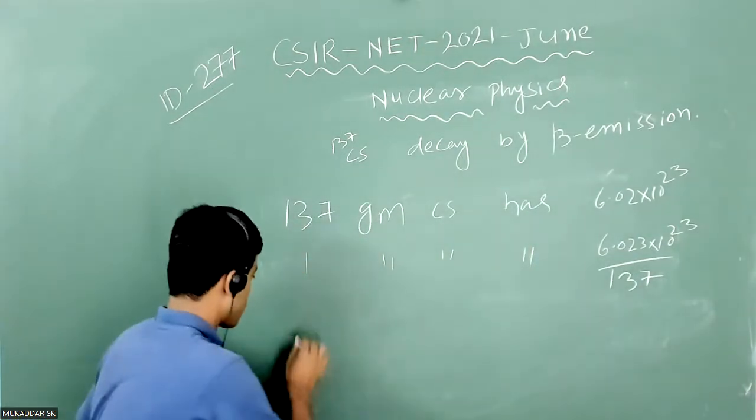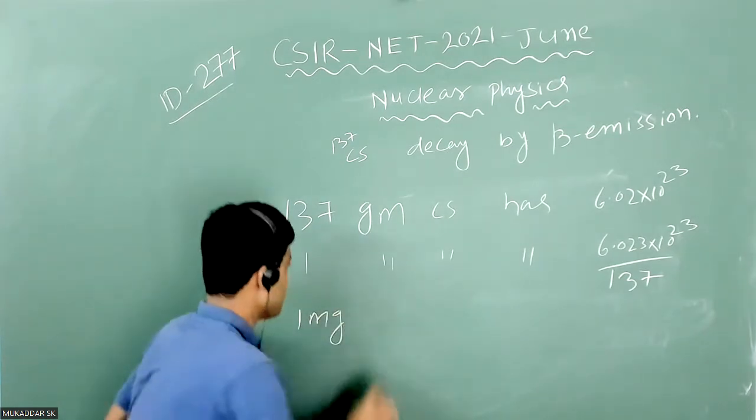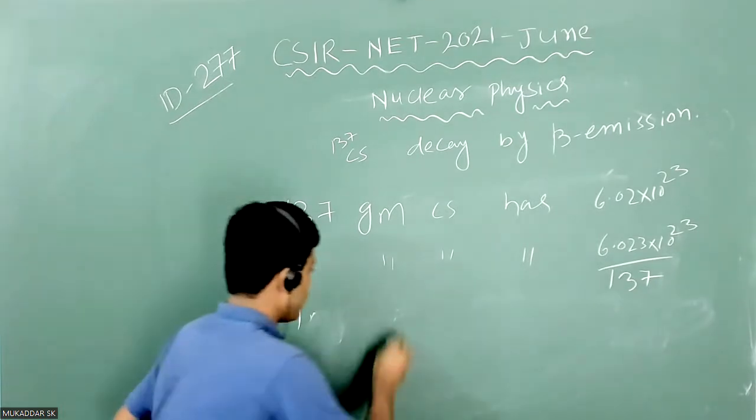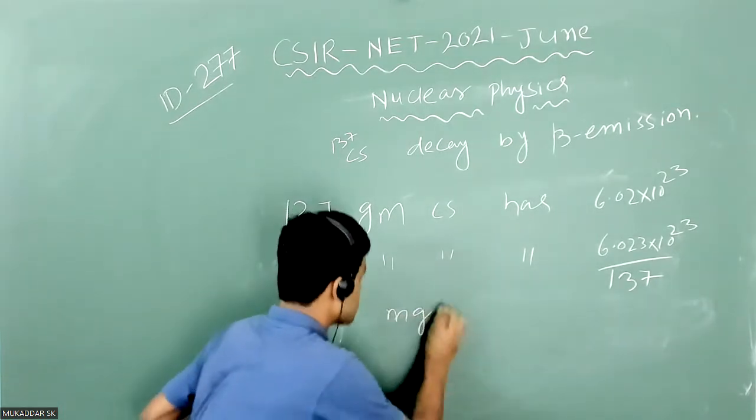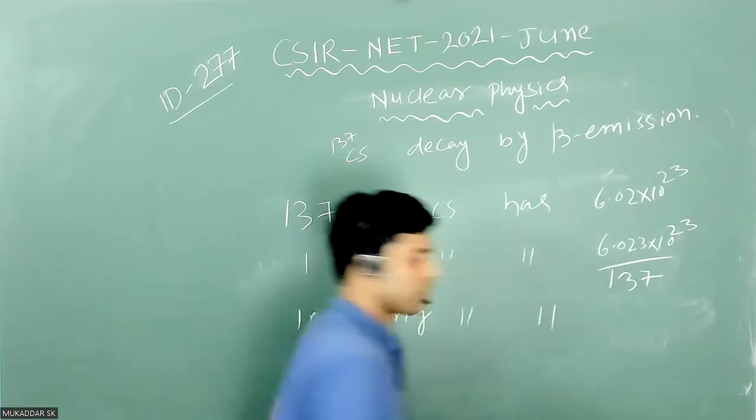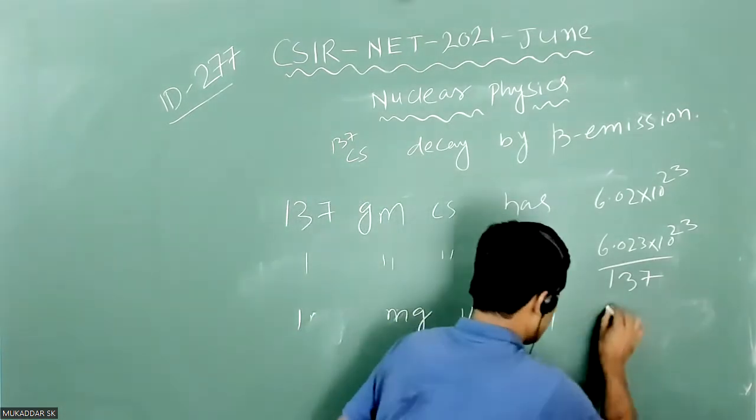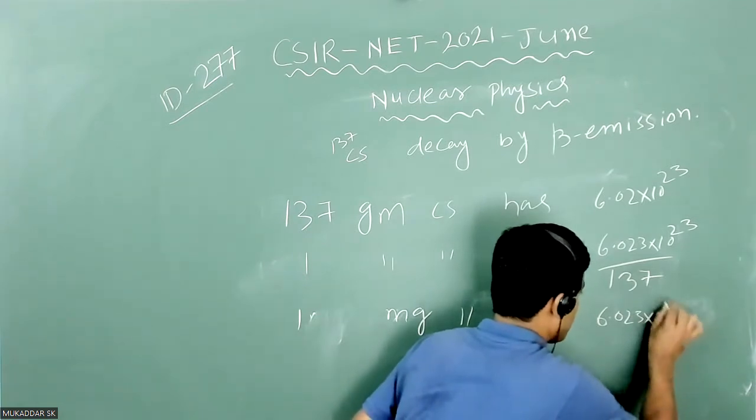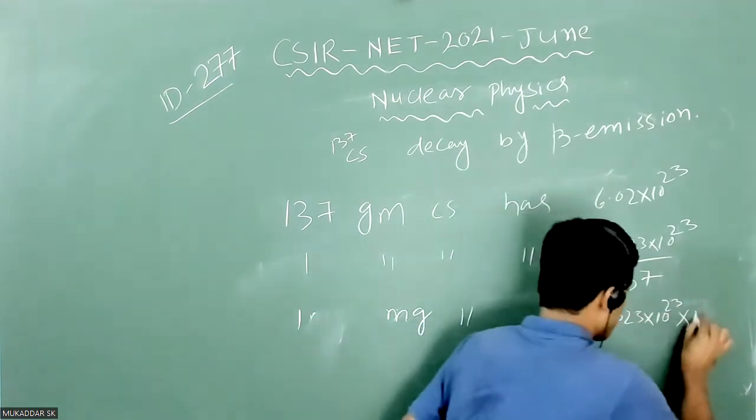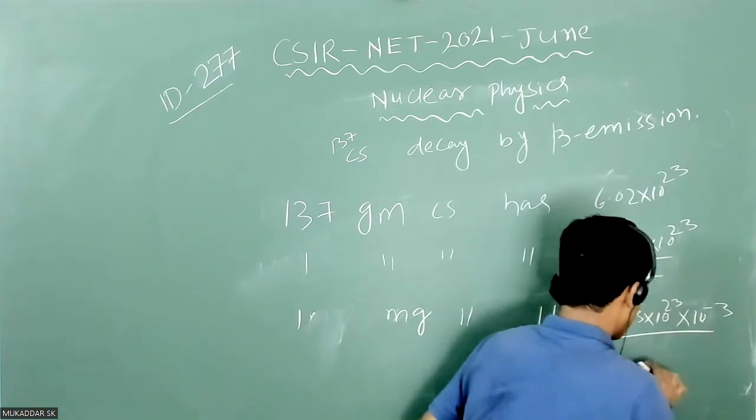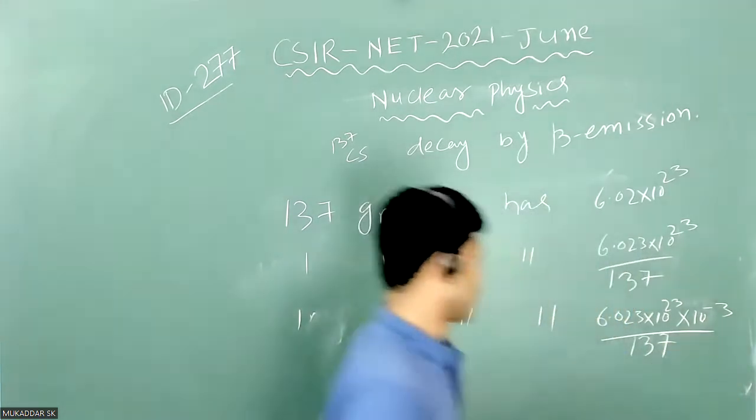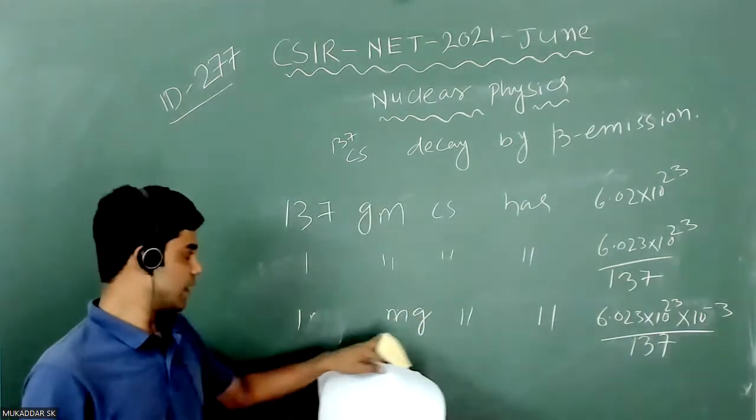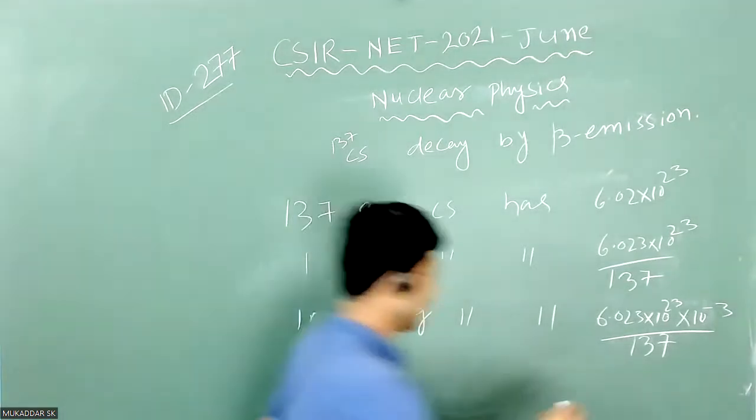Then 1 milligram cesium will have 6.023×10²³×10⁻³ divided by 137. This multiplication by 10⁻³ is because of 1 milligram. So this is basically N₀.